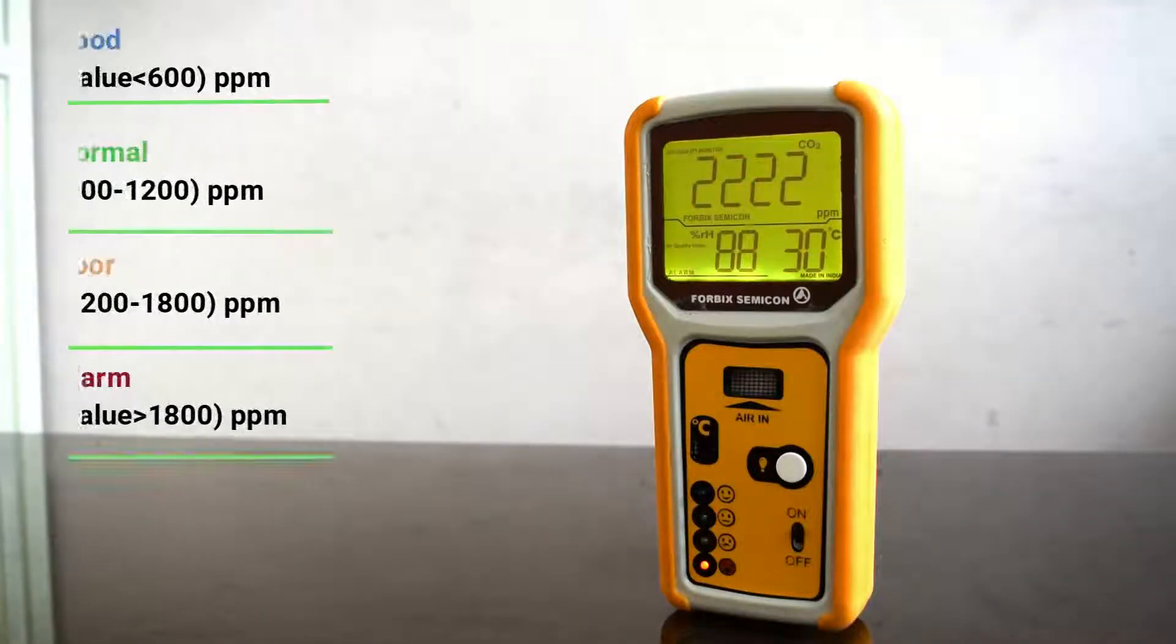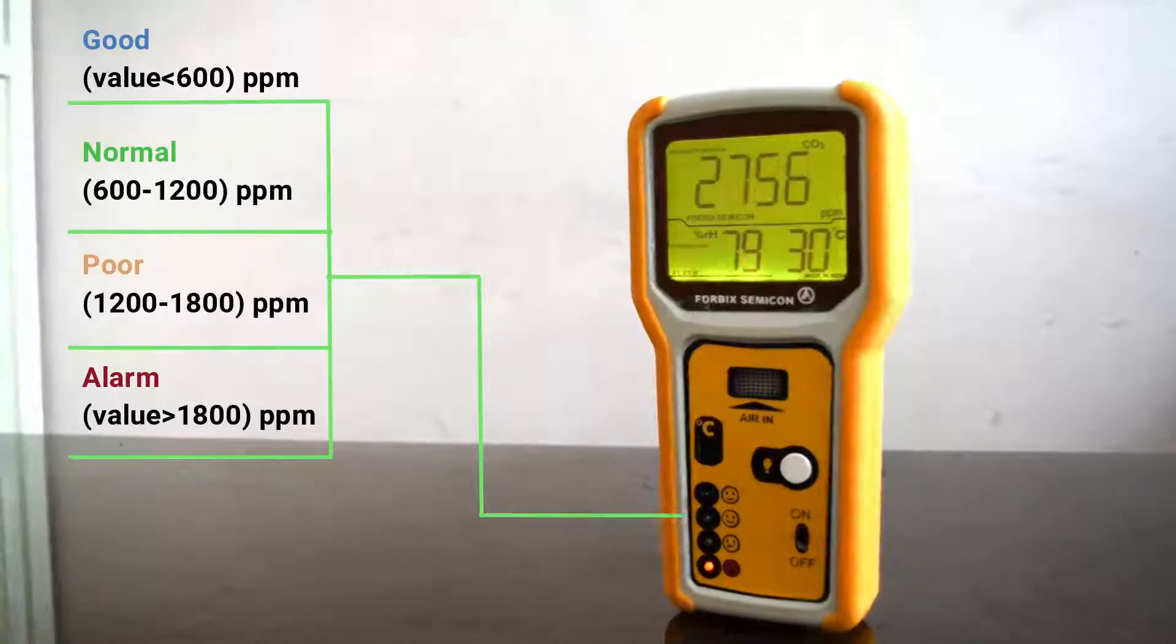This instrument has 4 indicators. Each of them show the range of carbon dioxide.